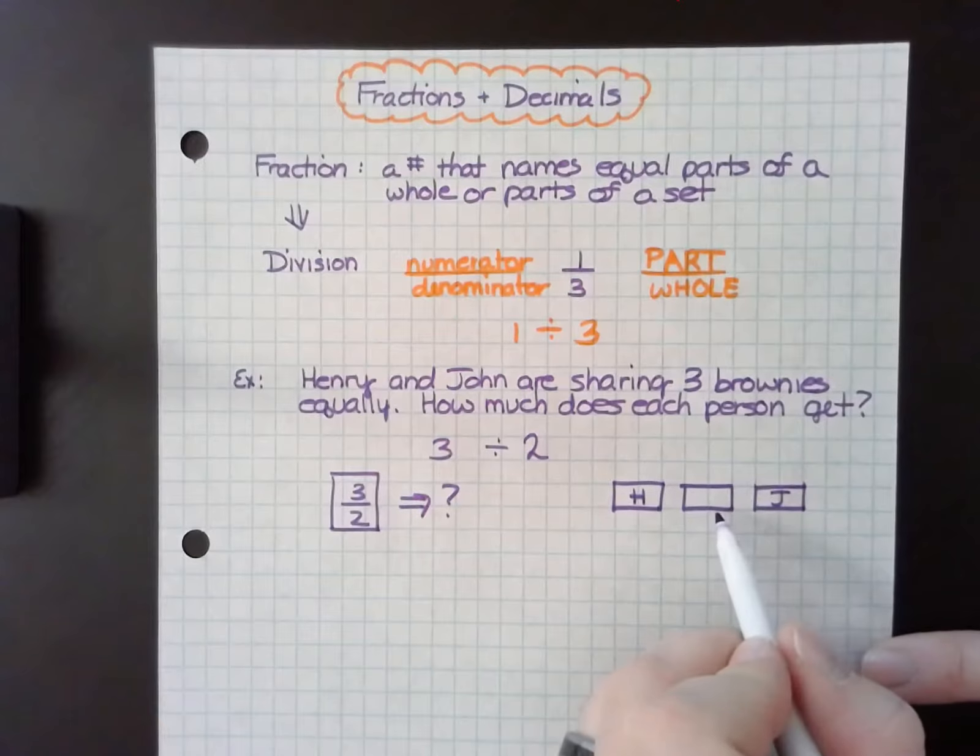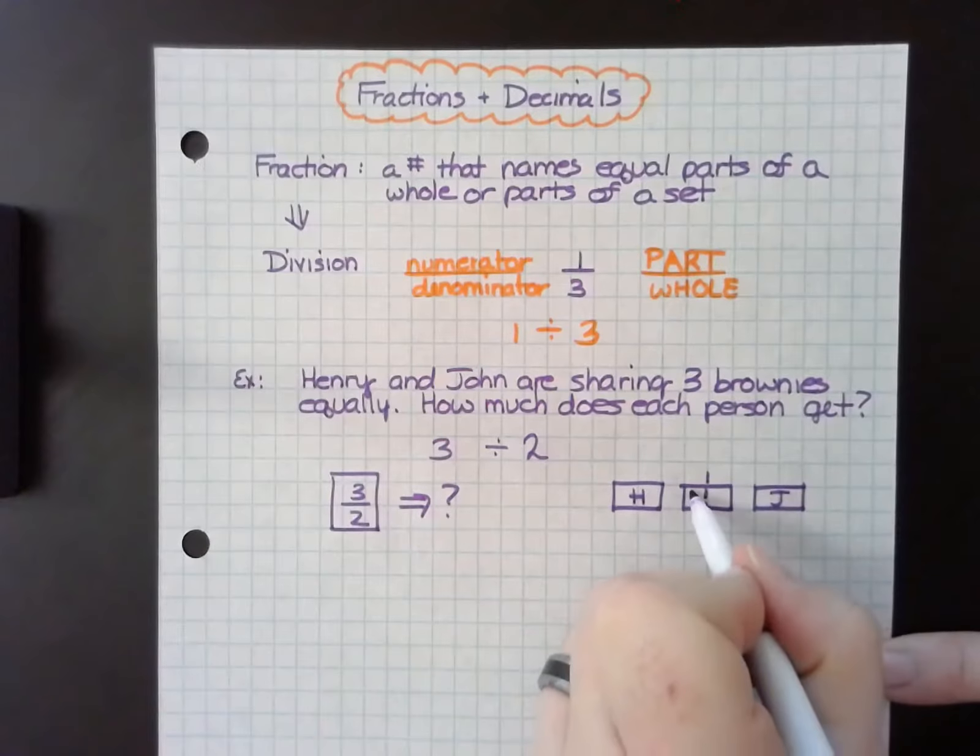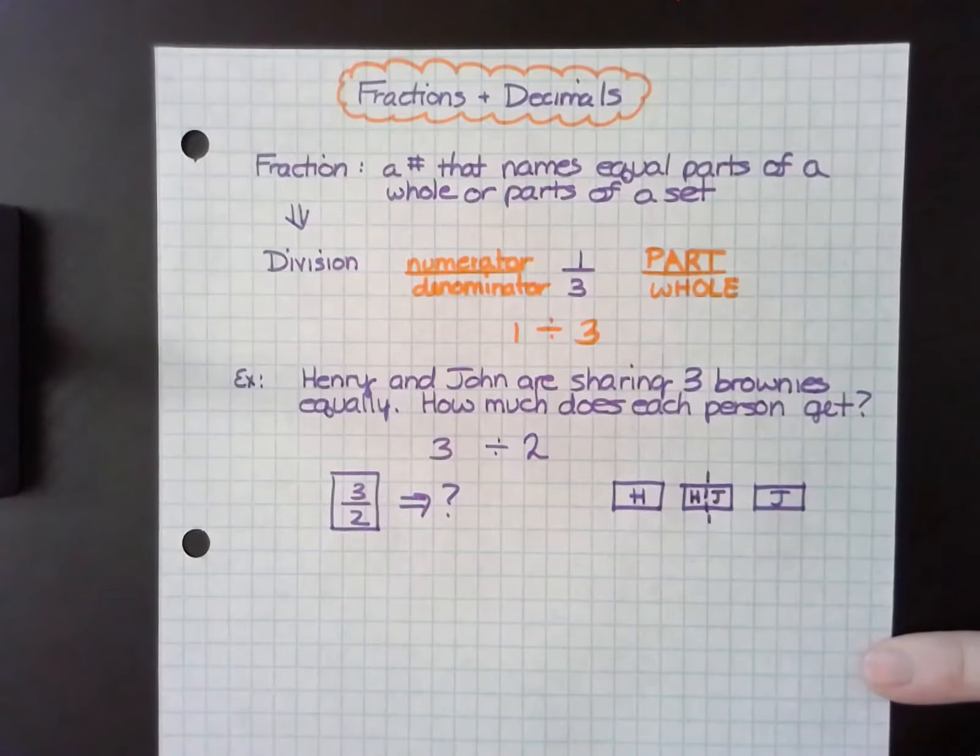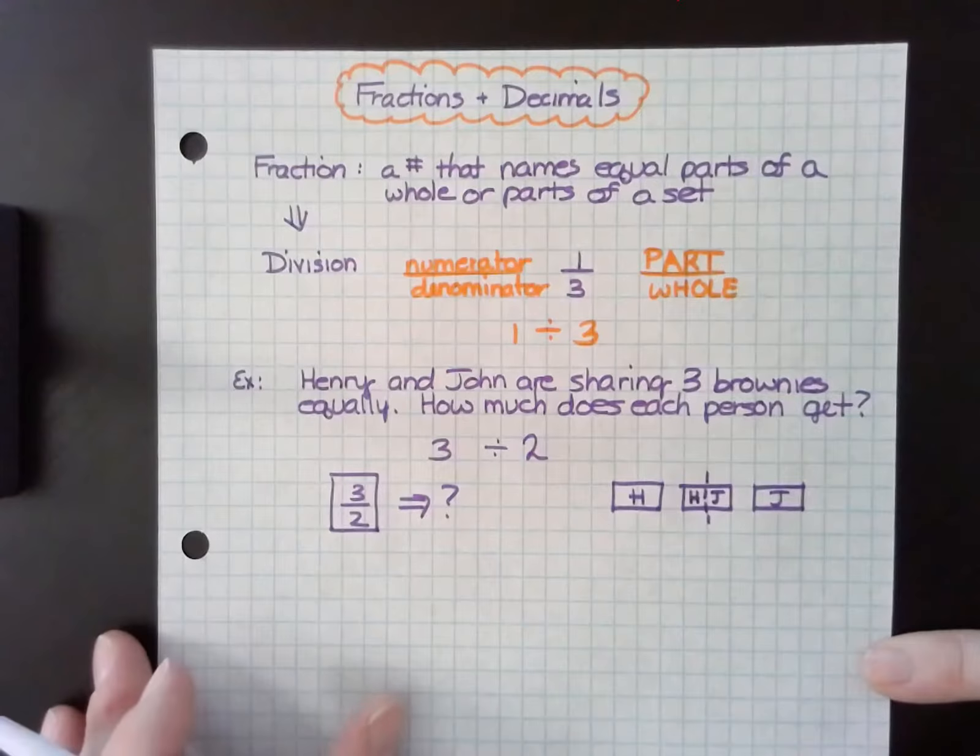And that means I'm going to split up this third one. If I split that in half, then Henry can get that half and John can get that half. And so now I can total what three divided by two actually means.